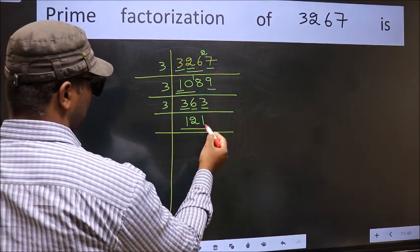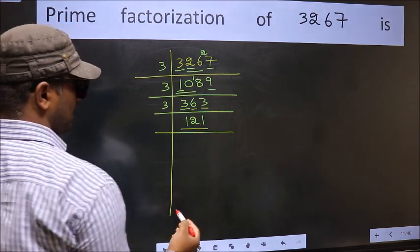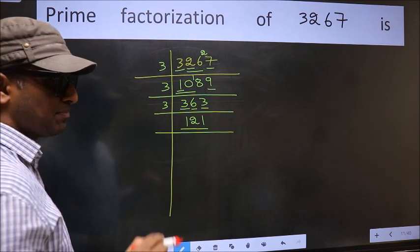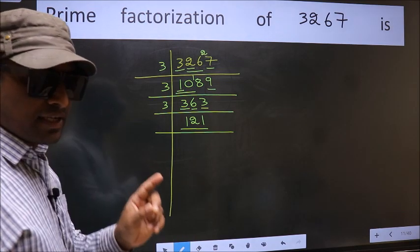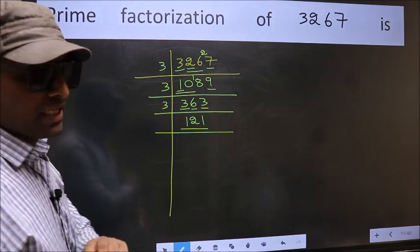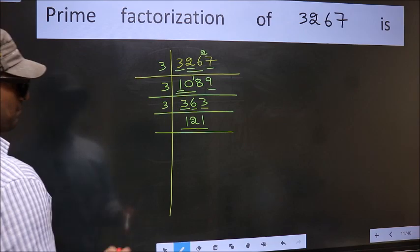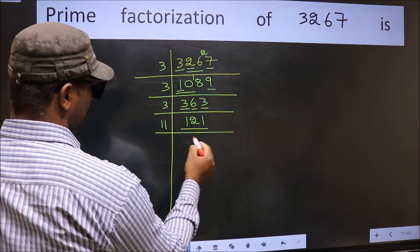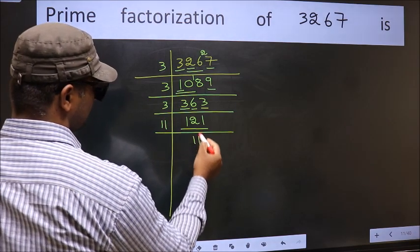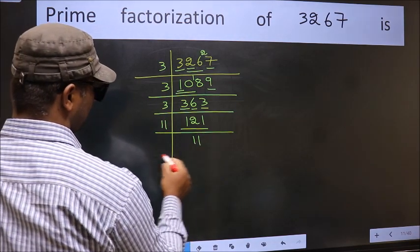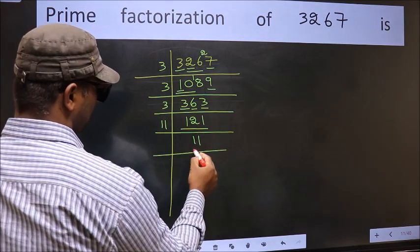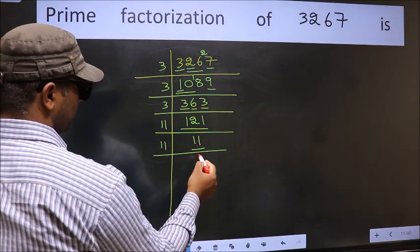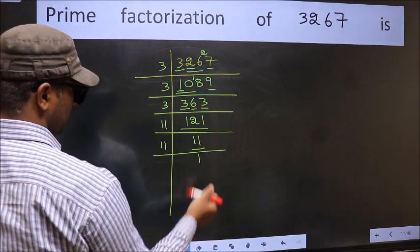Now here we have 121. Always remember: 11 times 11 is 121. Now here we have 11, and 11 is a prime number. So 11 ones are 11.